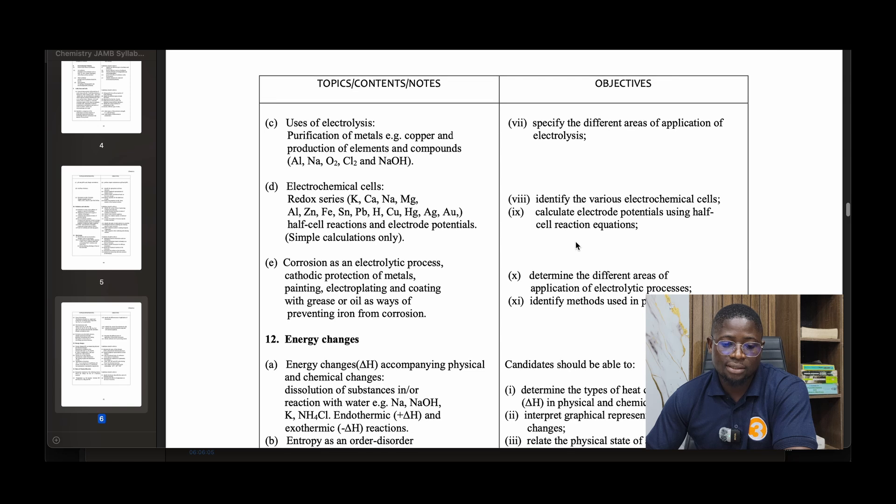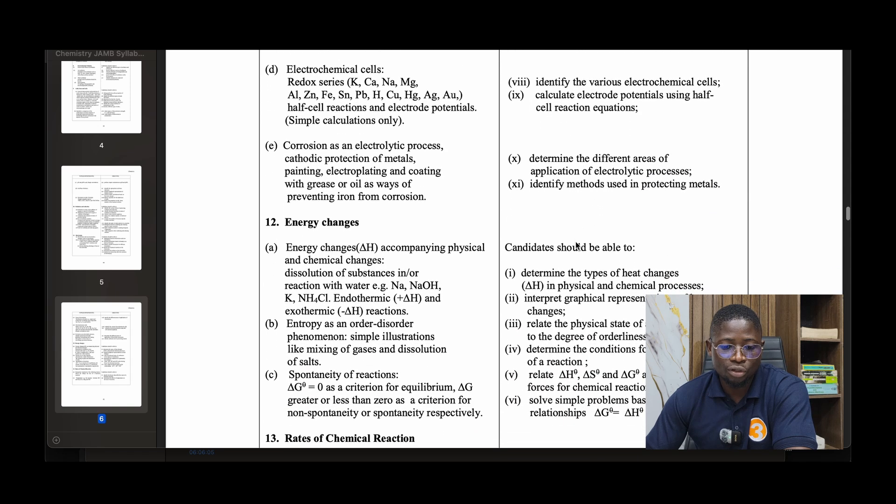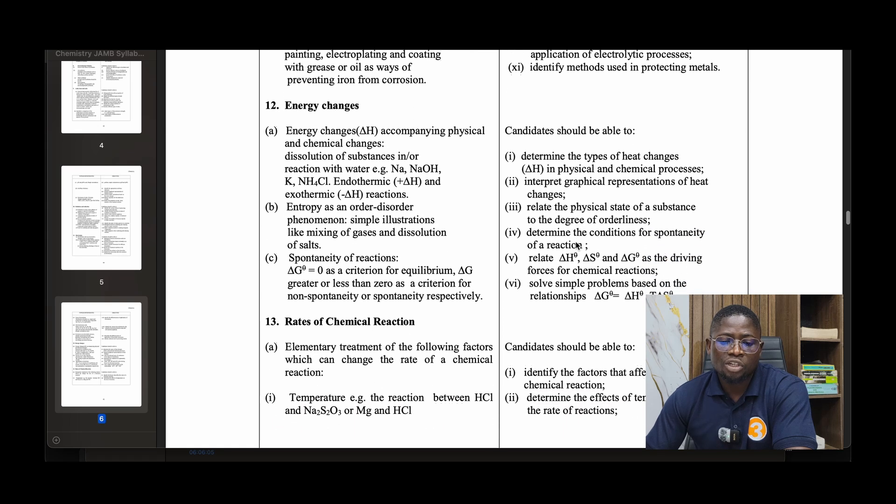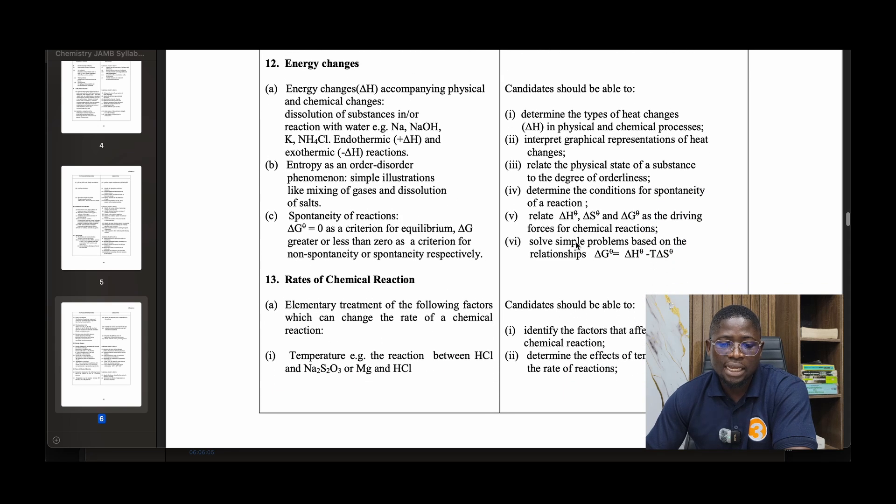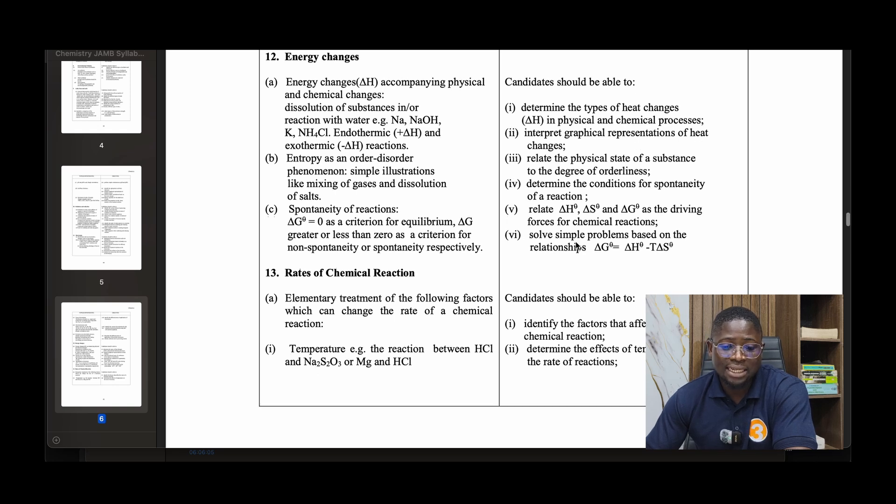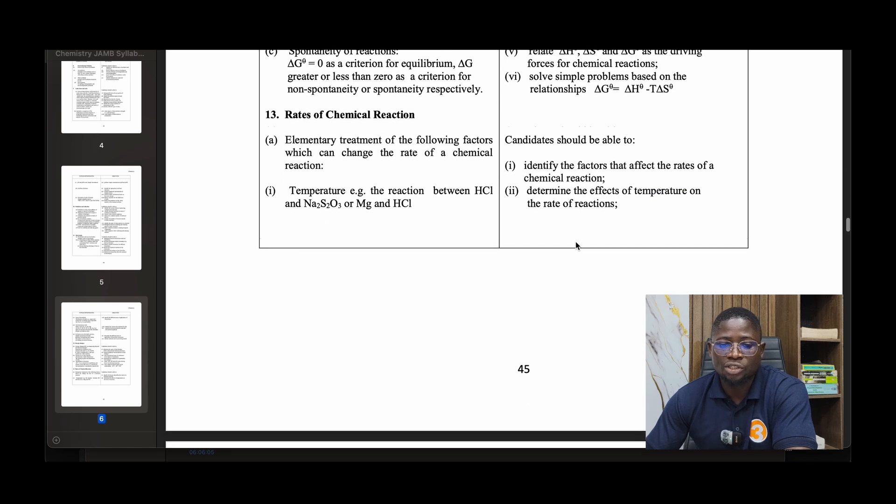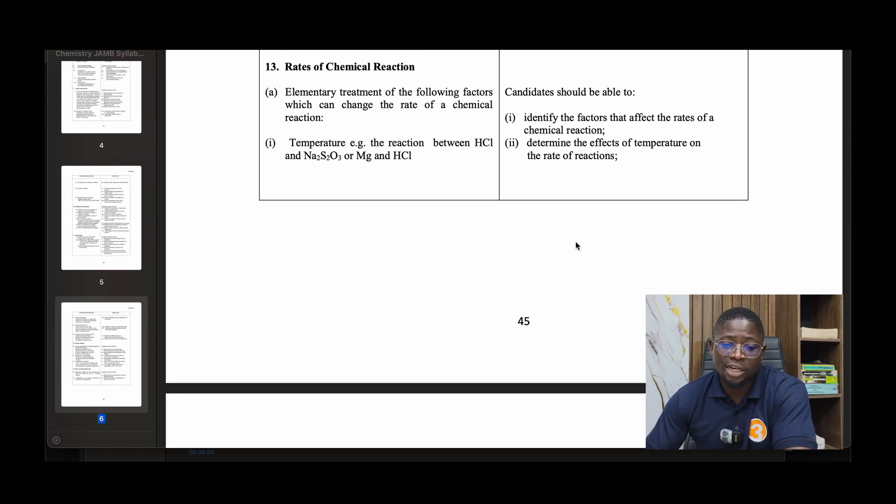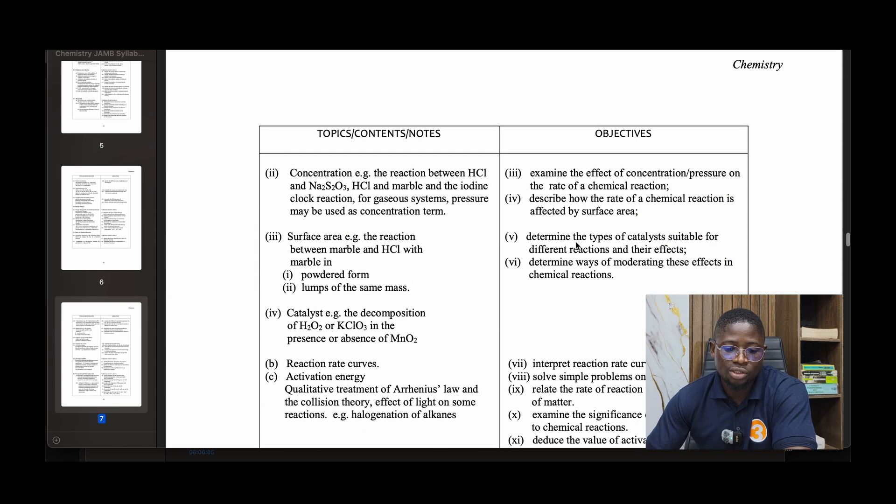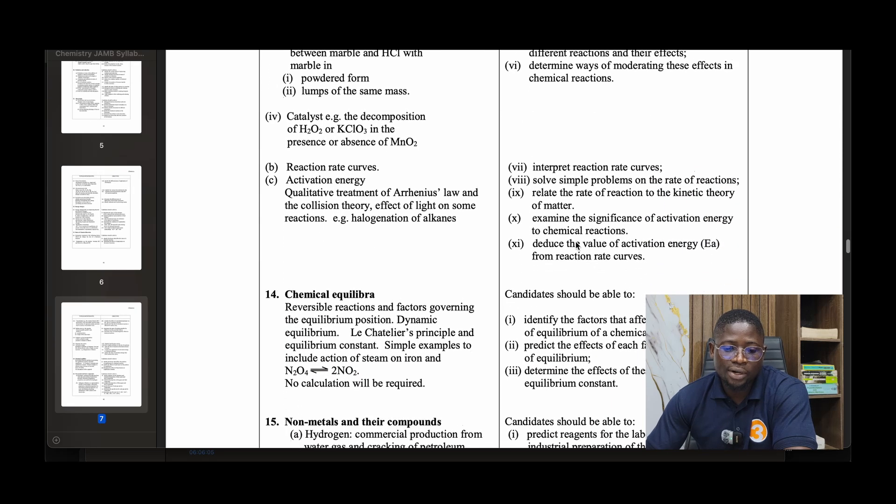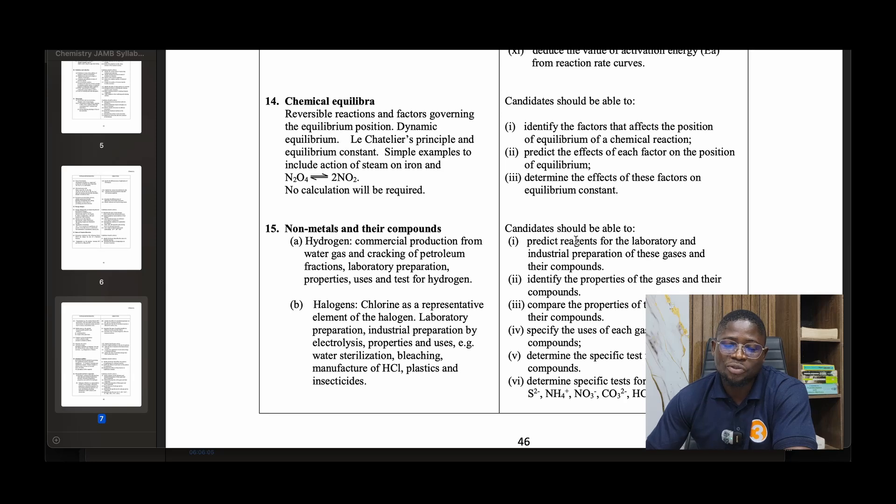The uses of electrolysis and electrochemical cells. Corrosion as an electrolytic process. Number thirteen: Energy changes - that is ΔH accompanying physical and chemical changes, dissolution of substances, and reactions with water. Entropy as an order-disorder phenomenon. Spontaneity of reactions. Number fourteen: Rate of chemical reaction. Elementary treatment of factors which can change the rate of chemical reaction: temperature, pressure, concentration, surface area, and catalyst. Reaction rates, curves, and activation energy.